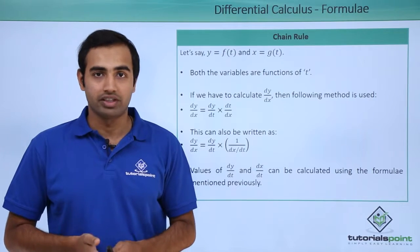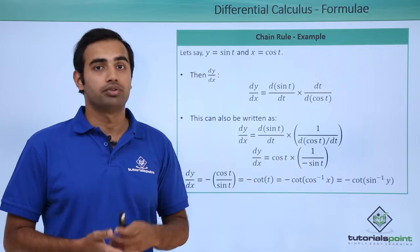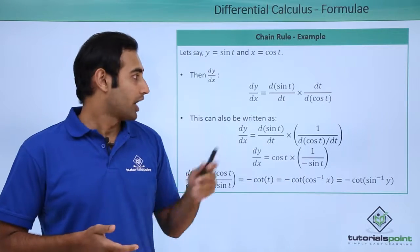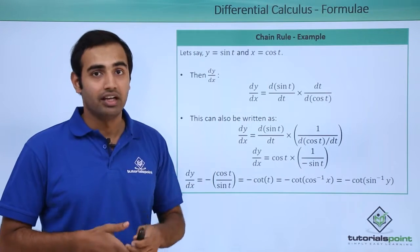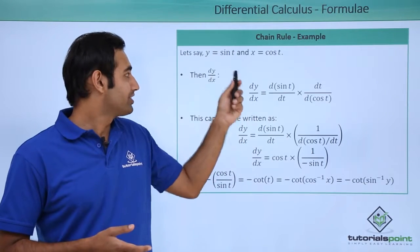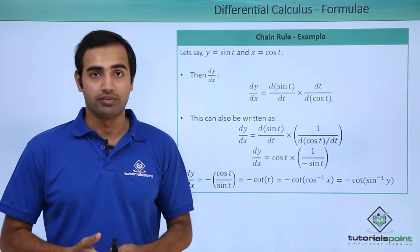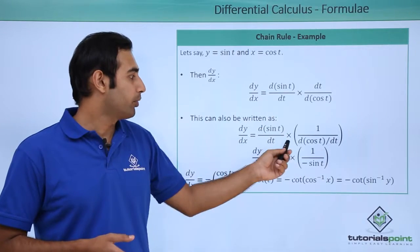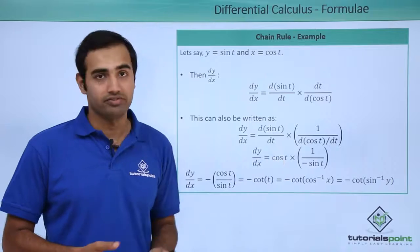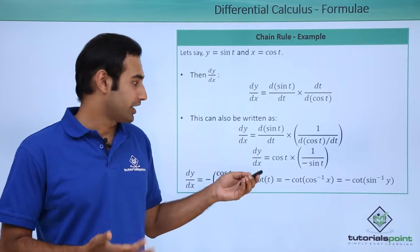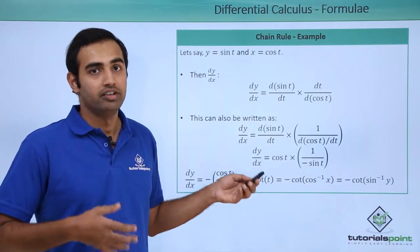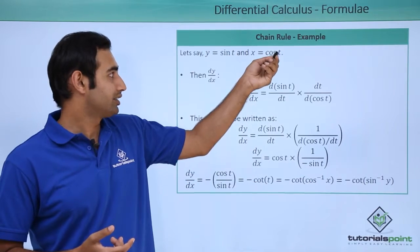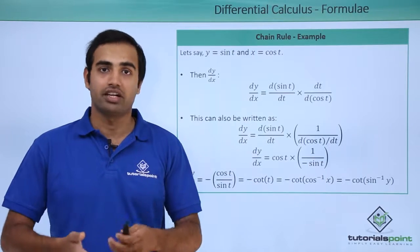Here is a chain rule example. Let y = sin(t) and x = cos(t); find dy/dx. Multiplying and dividing by dt: dy/dx = (d(sin t)/dt) · (1/(d(cos t)/dt)) = cos(t) · (1/(−sin t)) = −cos(t)/sin(t) = −cot(t). This can be written as −cot(cos⁻¹ x), since t = cos⁻¹ x, or equivalently as −cot(sin⁻¹ y), since t = sin⁻¹ y as well.